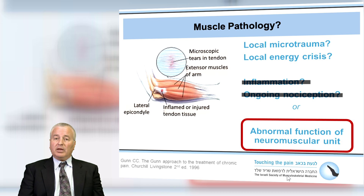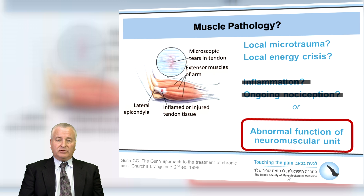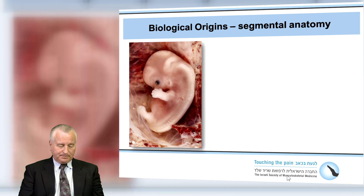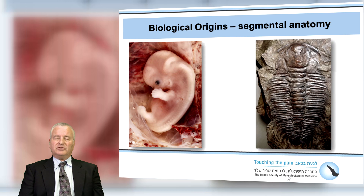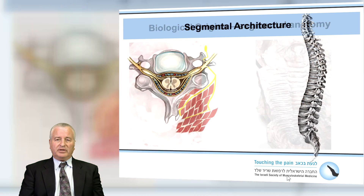Dr. Gunn introduces the idea of a neuromuscular unit, which we know from our basic physiology is an intact active unit. We can't function without a nerve attached to a muscle and its reflex arc back to the central nervous system. Going back to our origins, in the fetus we can see very early on developing a spinal cord and a segmental distribution to the body. A fossil from a trilobite from three billion years ago shows exactly the same pattern of growth. This is how the body is built — in a segmental fashion. Let's use that, build on it, and help find our patient's problem.